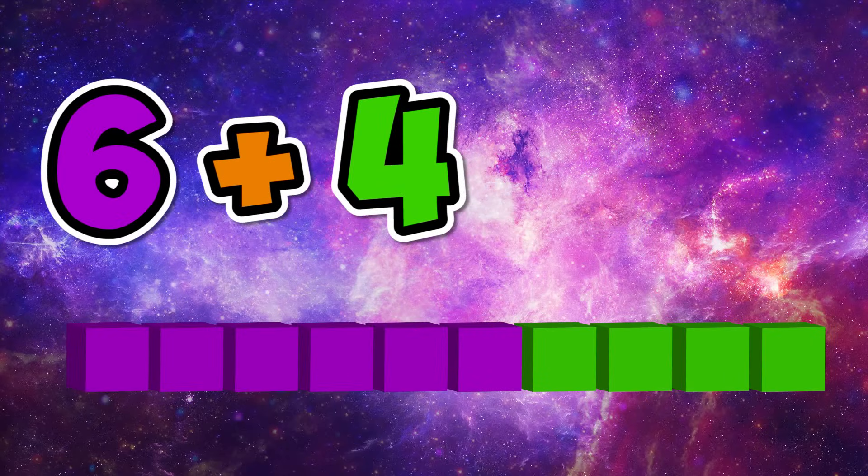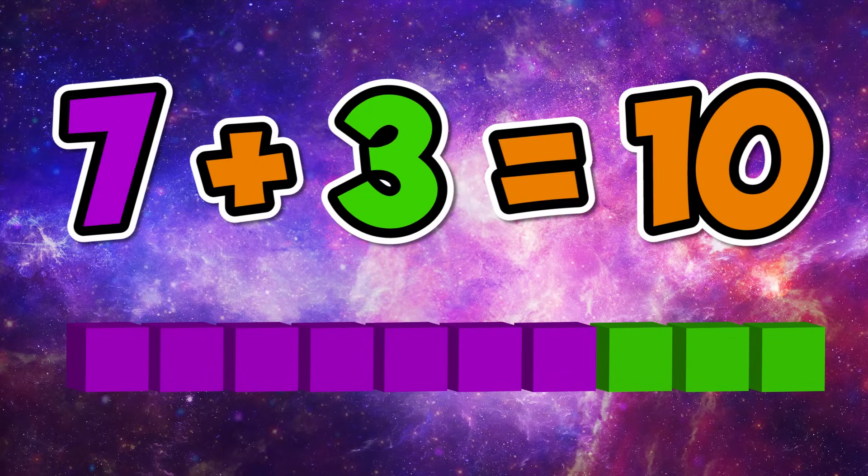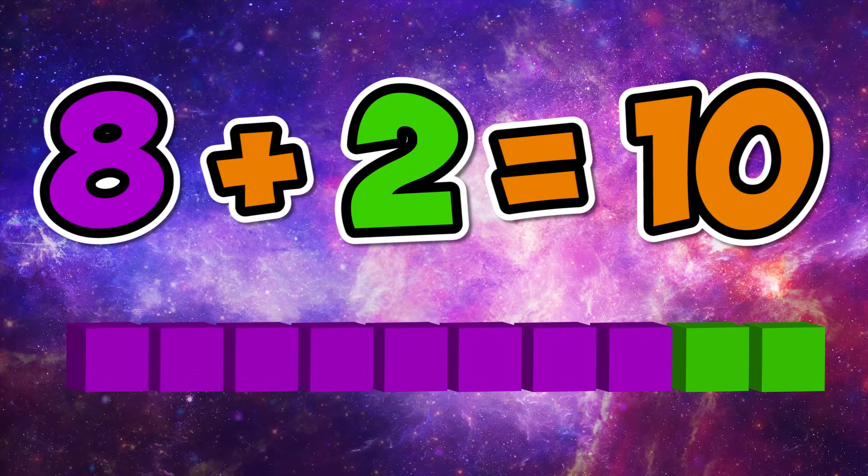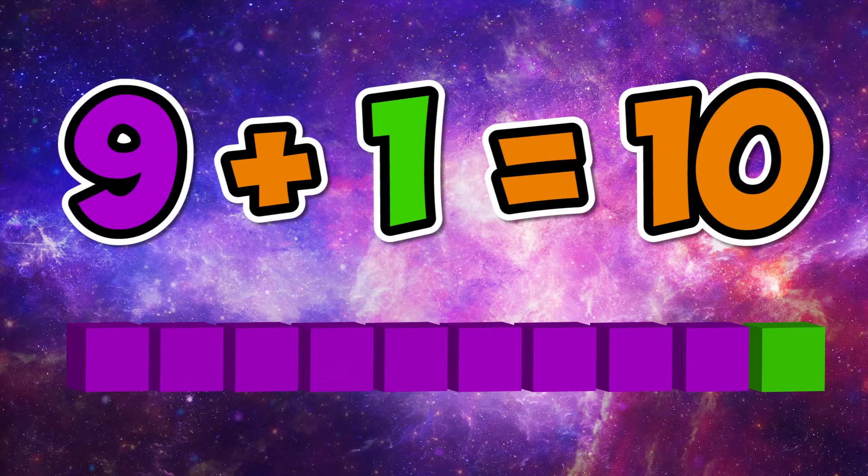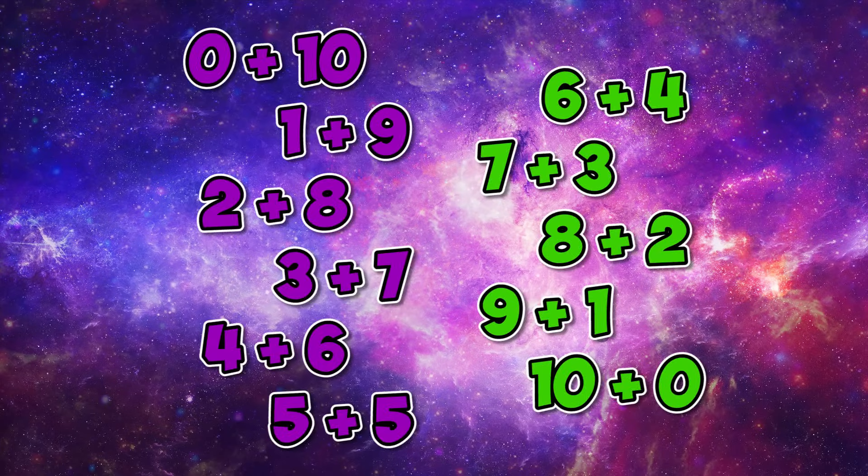Six plus four makes ten. Seven plus three makes ten. Eight plus two makes ten, nine plus one makes ten, ten plus zero makes ten. These numbers are friends of ten.